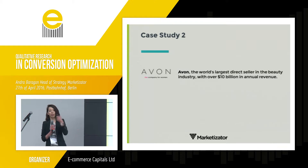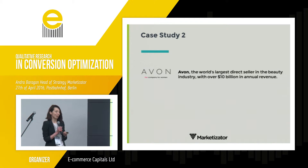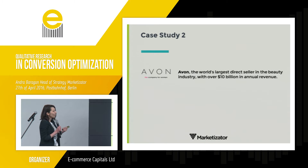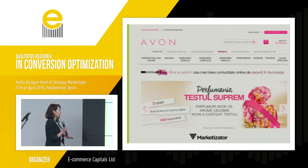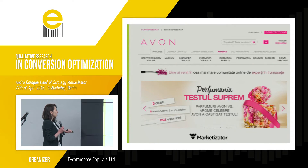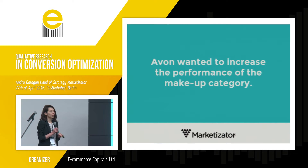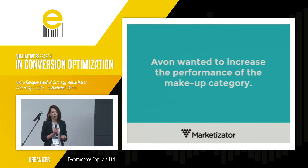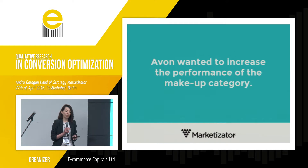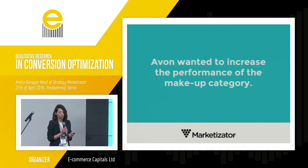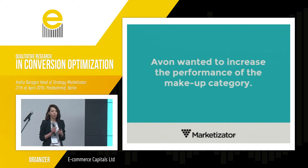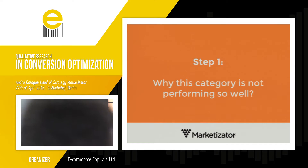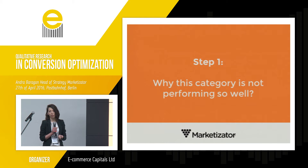This leads us to our second case study, which is for Avon — I'm sure all the ladies know about them. They're the largest direct seller in the beauty industry, making over $10 billion in annual revenue. They wanted to increase the performance of their makeup category. The optimization goal came from them. How do you increase performance? You investigate. We found out why the category was not performing well.